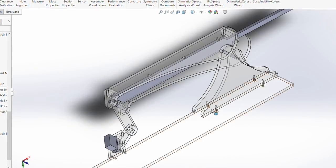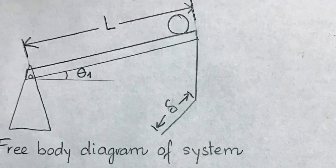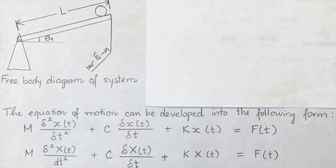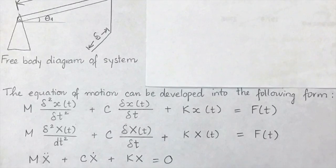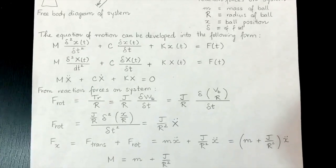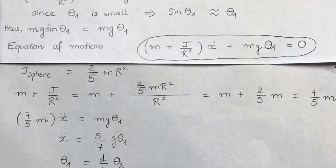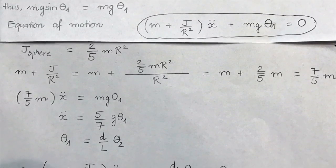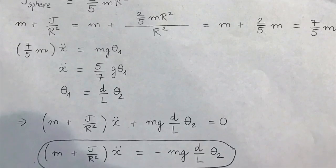Here is a free body diagram representing our system. The equations of motion can be used to solve for the relationship between the angle of the beam and the ball movement. The equations of motion can be developed into the following form from reaction forces on system. m can be solved. After solving for m, it is necessary to solve the angle of the beam. This can be done by equating the value for m to the force of the ball and gravity.